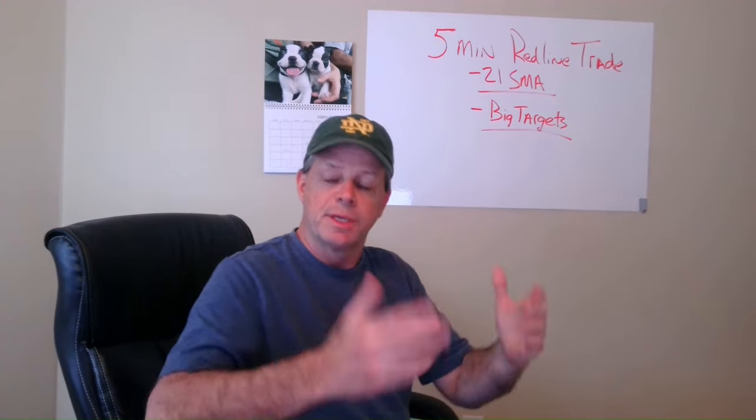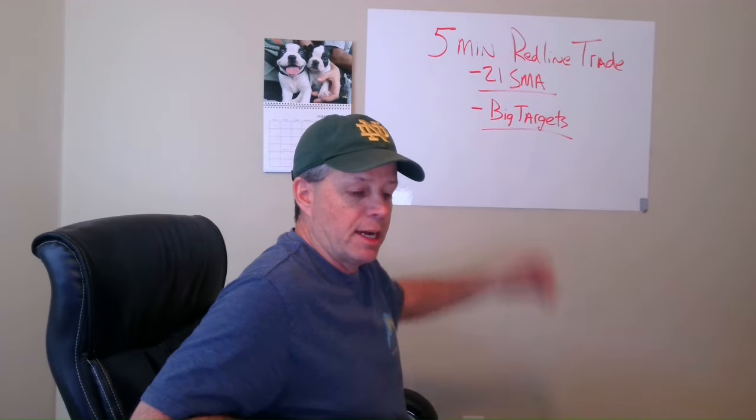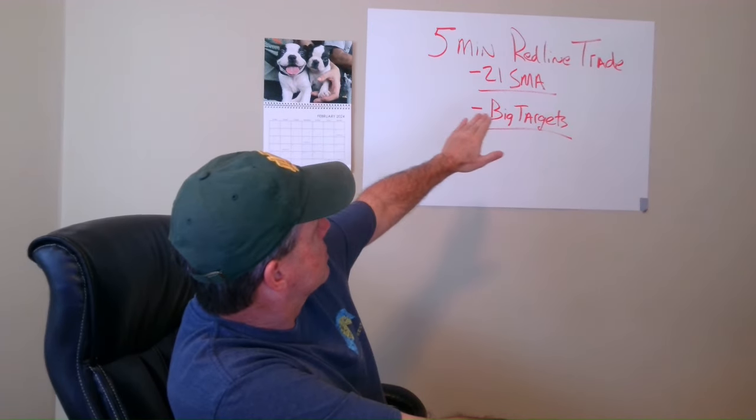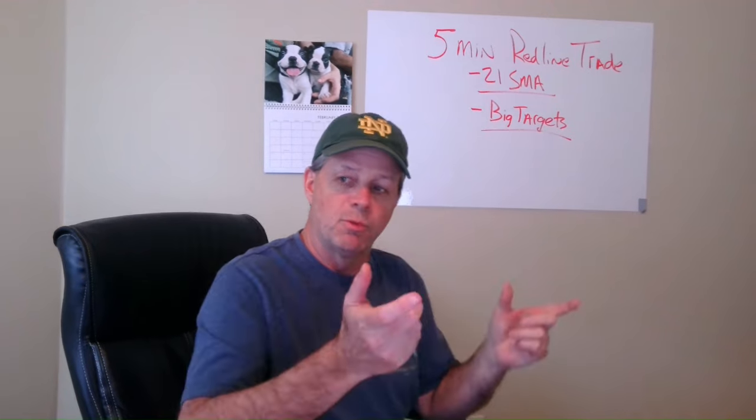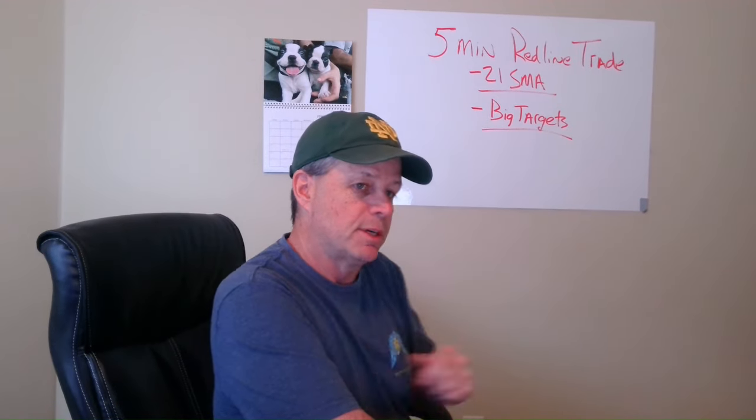There are some caveats, in my opinion, in using the five-minute red line that will help you increase your win percentage if you follow a few things I'm going to discuss. The main thing is the 21 SMA off five-minute data. I use a one-minute chart, so I inlay a five-minute SMA into a one-minute chart and trade off one-minute candles.